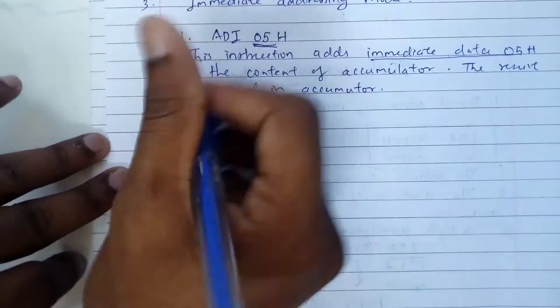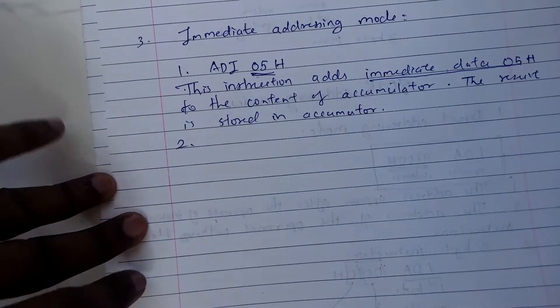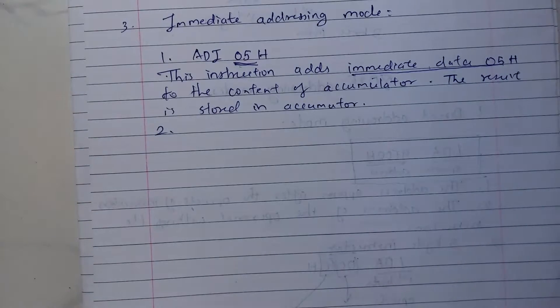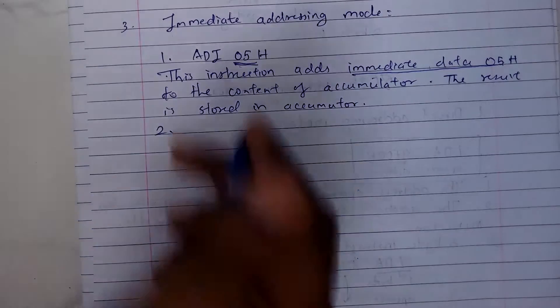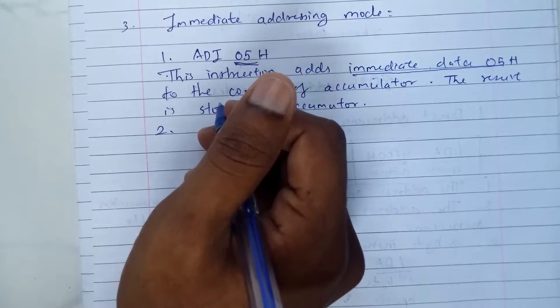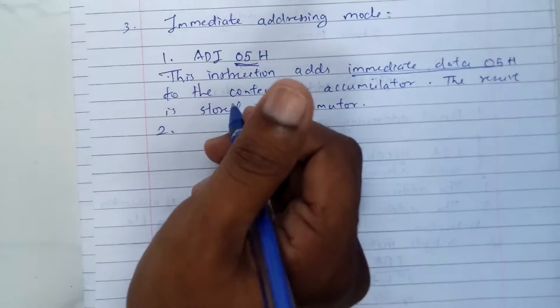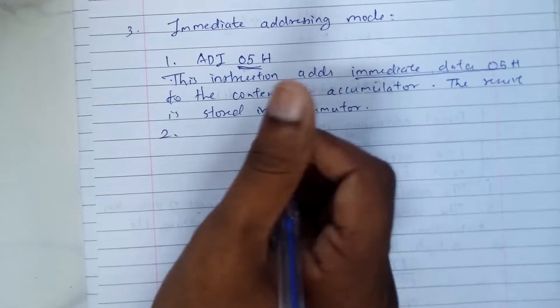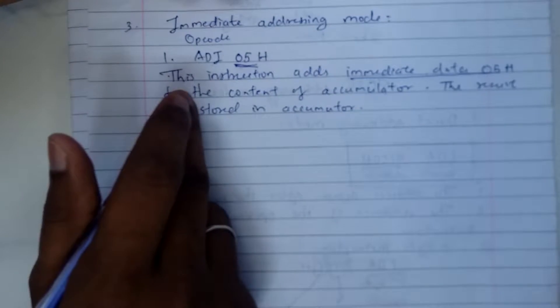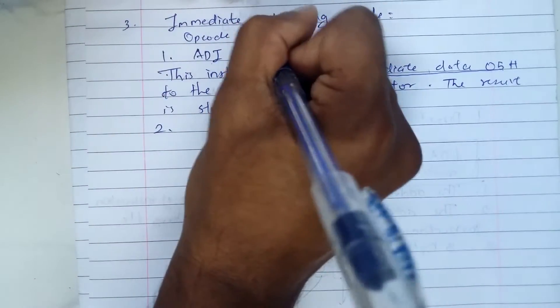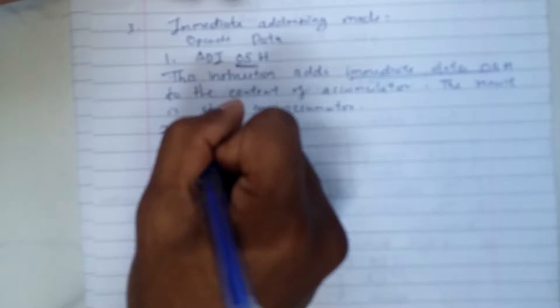Now the second point I'd like to mention: in immediate addressing, the data appears immediately after opcode of instruction in the program memory. As we knew in the first one, direct addressing mode, we had the address appearing after the opcode. Now this is the opcode, but in immediate addressing mode we have directly the data after the opcode. So I'd like to write this one.